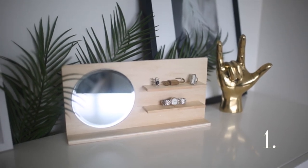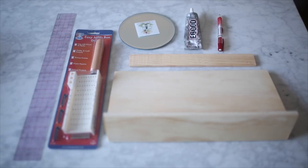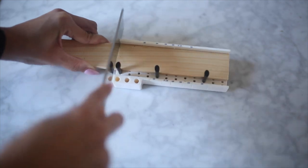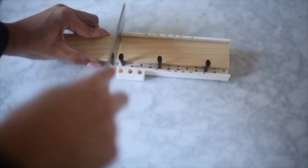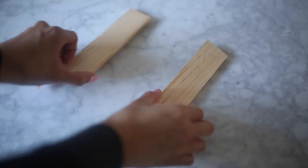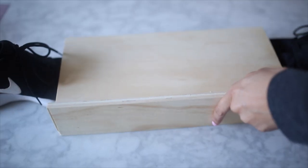DIY number one is this really cute mirrored jewelry shelf. For this you're going to need a standing sign I picked up at my local craft store, some extra wood, a round mirror, some E6000 glue, a pencil, and lastly a small saw and a ruler. You're going to begin by taking that smaller piece and cutting it directly in half. This is going to create your shelves, so you have two little shelves.